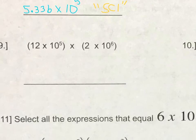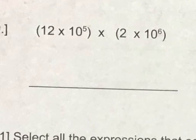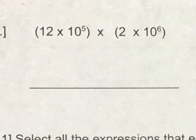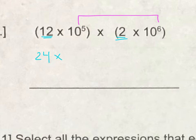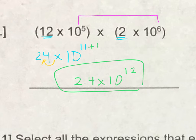Moving on to number 9, we have a multiplication problem. For multiplication and division, we can use our exponent properties. If we're multiplying, we keep the base and add the exponents. So we do regular math with the coefficients — that's 12 times 2, which is 24. Then we keep the base and add the exponents: that's 10 to the 11th power. Then we have to put this in proper scientific notation, so the decimal has to go over 1. Our final answer is 2.4 times 10 to the 12th, since moving the decimal left by 1 adds 1 to our exponent.